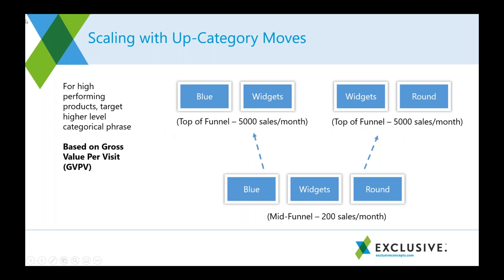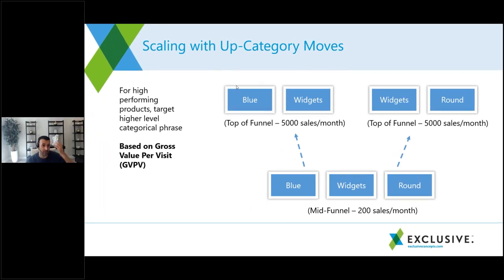Category moves are surgical scaling opportunities. A product might do well for a mid-tail term like 'blue round widgets,' but removing one qualifier leads to a search term with 10x or 100x more search volume. These are difficult leaps but can be the most impactful. Clients often come to us wanting to scale, and what we look for are these surgical opportunities — high search volume keywords where we are good candidates to achieve high sales velocity.